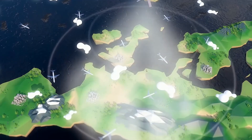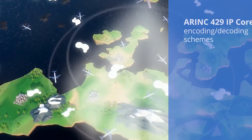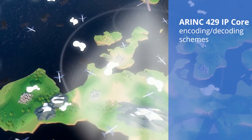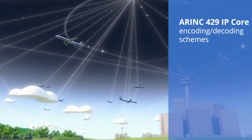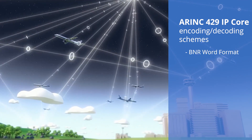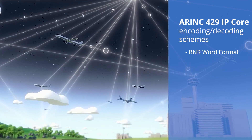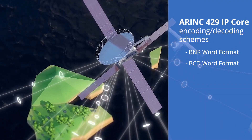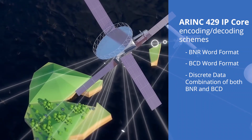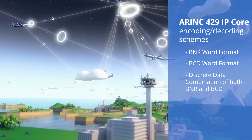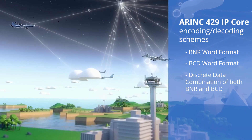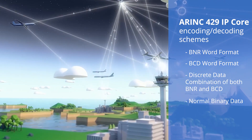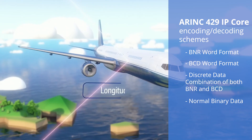ERINC-429-IP Core supports various encoding-decoding schemes that include signed binary number word format, binary-coded decimal word format, discrete data, combination of both binary number and binary-coded decimal, and normal binary data.